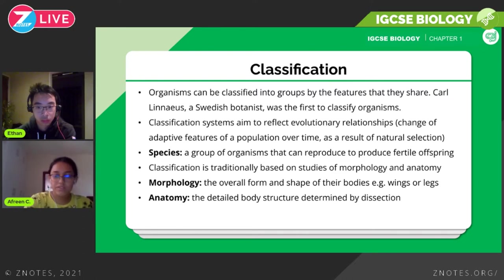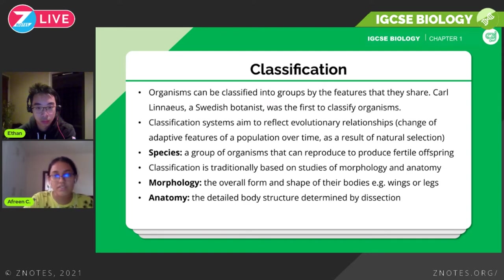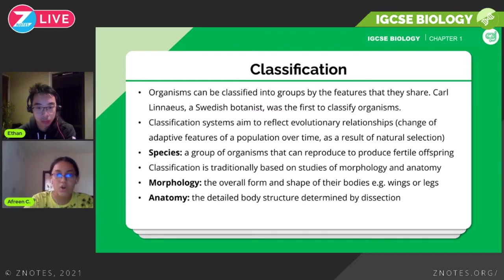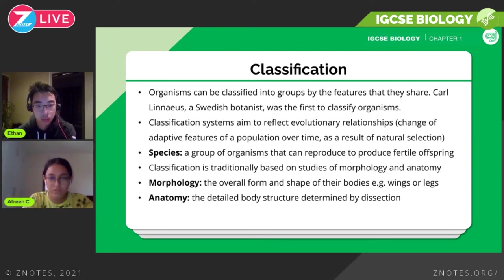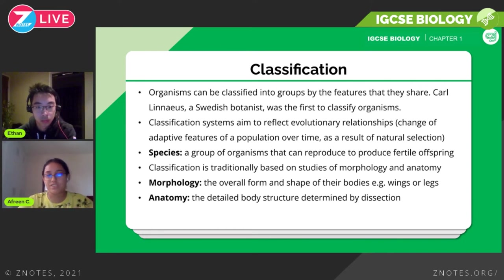A species is a group of organisms that can reproduce to produce fertile offspring. For example, a horse and a horse reproduce to produce a fertile offspring — again a horse. A horse and a donkey can also reproduce to produce a mule, but the mule is usually not fertile. So the key criterion is that organisms reproduce to form a fertile offspring.